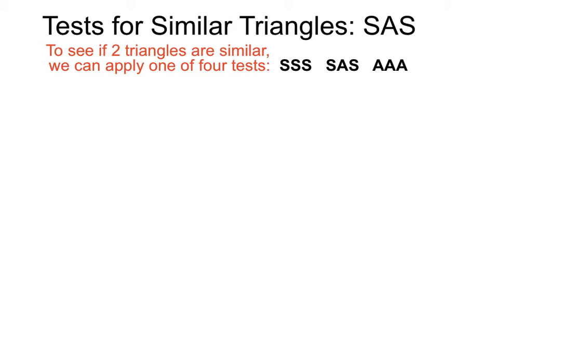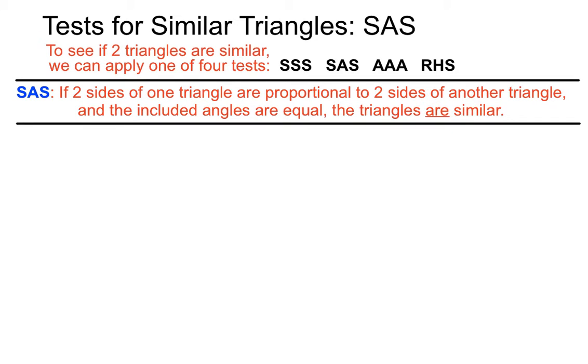We can also use tests of AAA and RHS to see if two triangles are similar. This SAS test for similar triangles says that if two sides of one triangle are proportional or in the same ratio to two sides of another triangle and the included angles are equal, then the triangles are similar. Let's see an example of that.